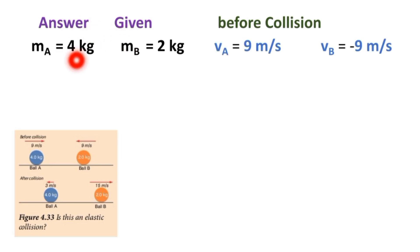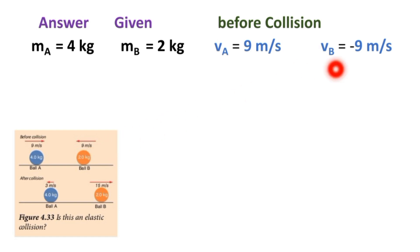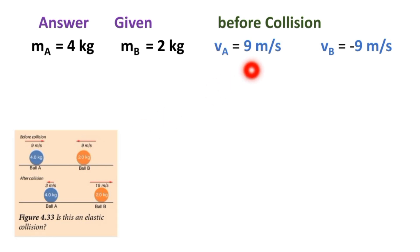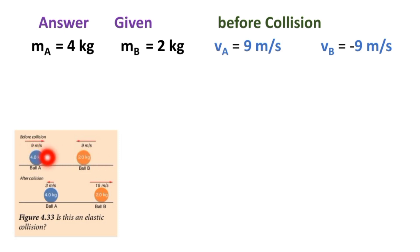Given: mass of ball A = 4 kilogram, mass of ball B = 2 kilogram. Before collision: velocity of ball A = 9 meter per second, velocity of ball B = minus 9 meter per second. Taking positive and negative directions into account.